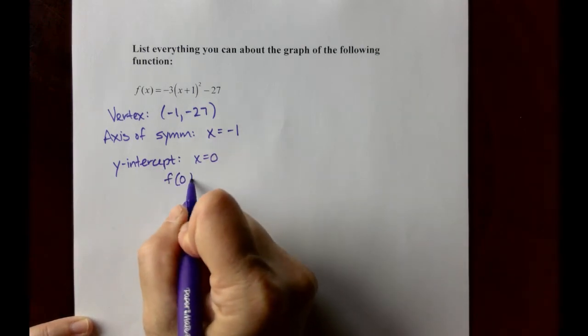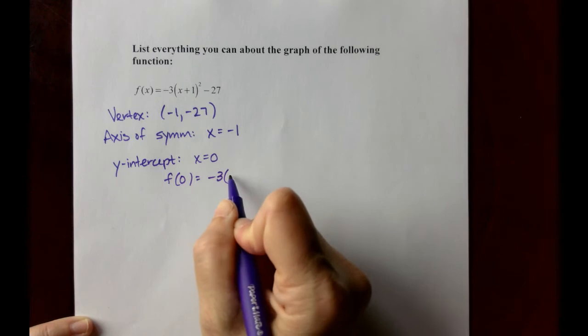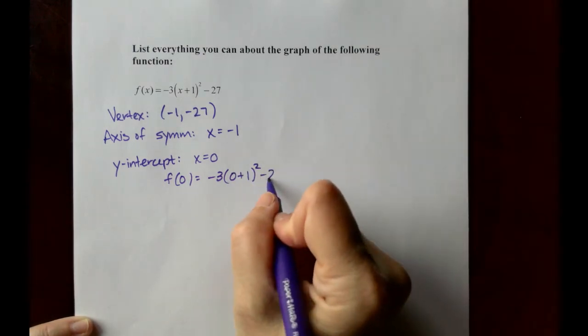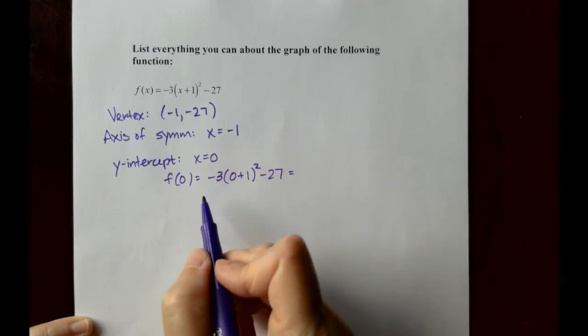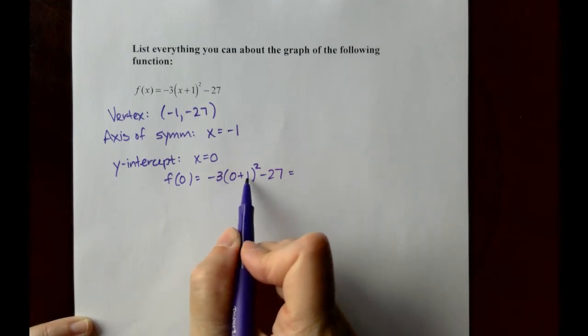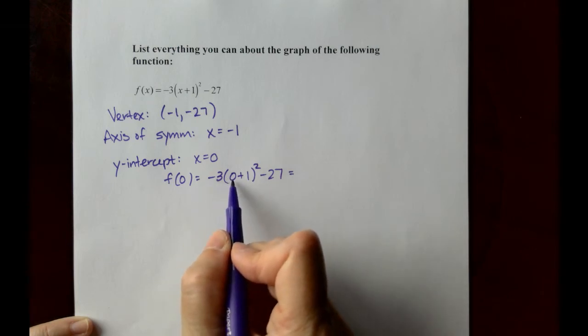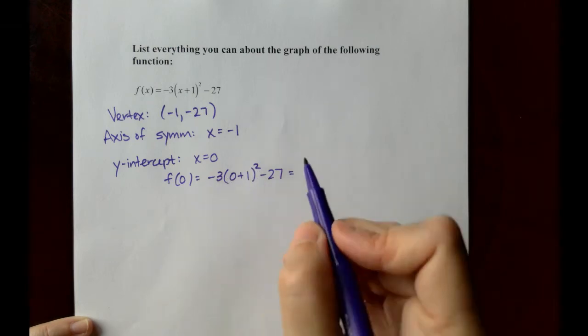f of 0 would equal negative 3 times the quantity 0 plus 1 squared minus 27. When we work on this, 0 plus 1 is just 1. 1 squared is 1. Negative 3 times 1 is negative 3 minus another 27.